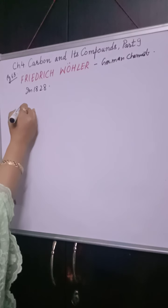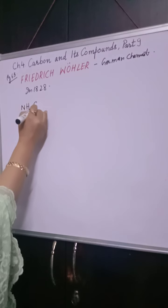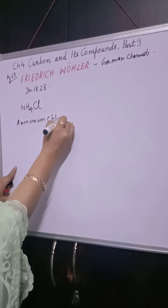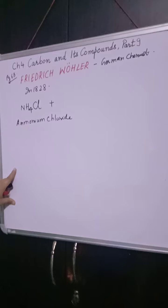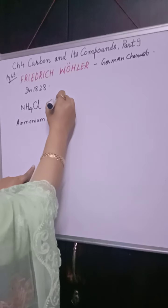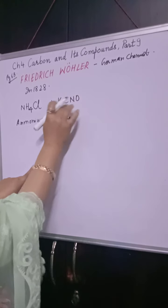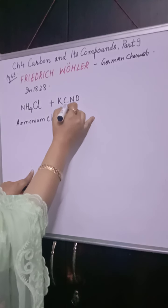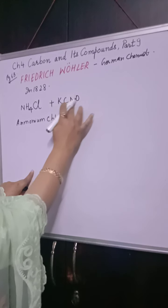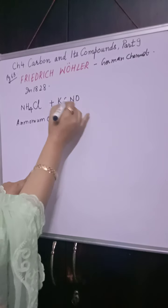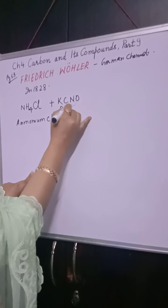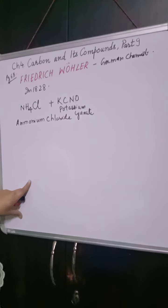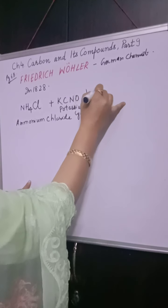He took aqueous solutions of two inorganic compounds. One was ammonium chloride, NH4Cl — aqueous solution of ammonium chloride. The other inorganic compound he took was potassium cyanate, KCN O. He took aqueous solutions of these two inorganic compounds and heated the mixture.